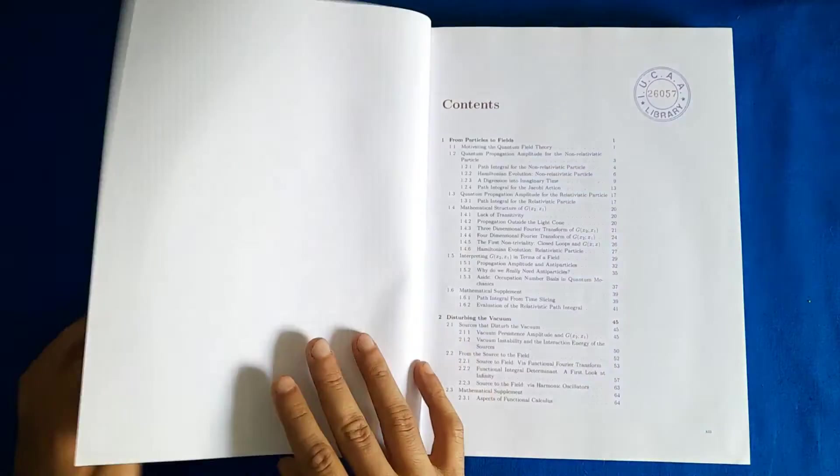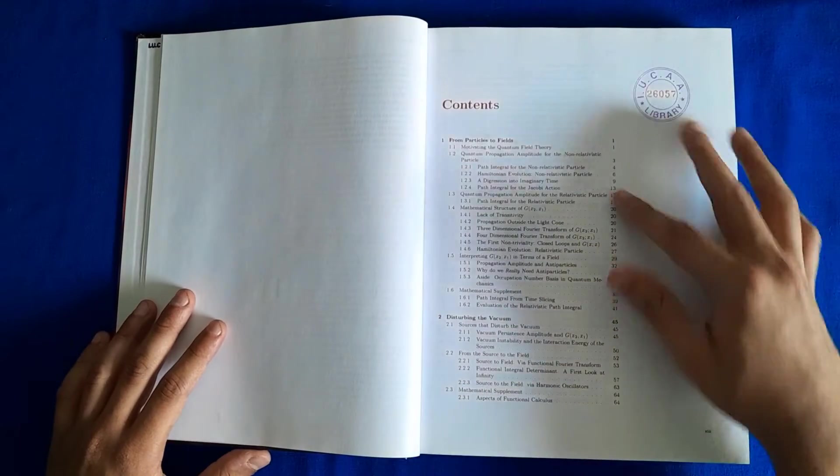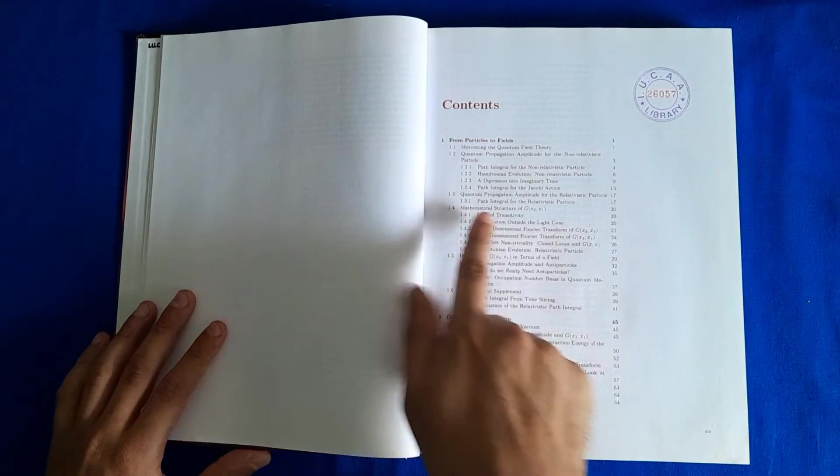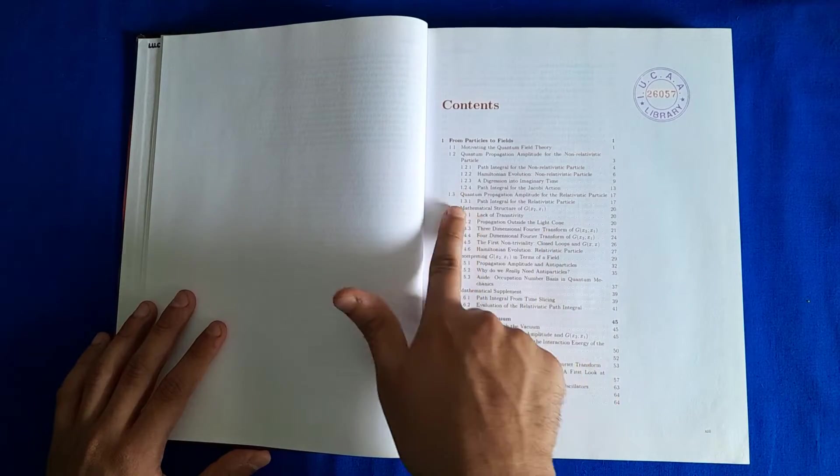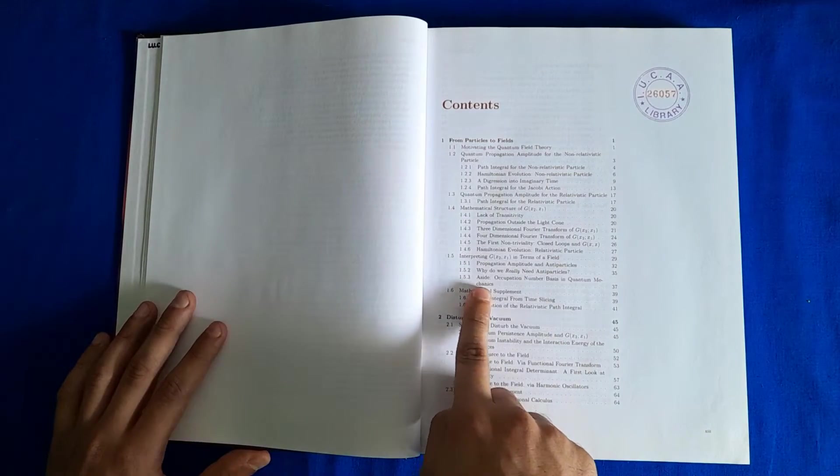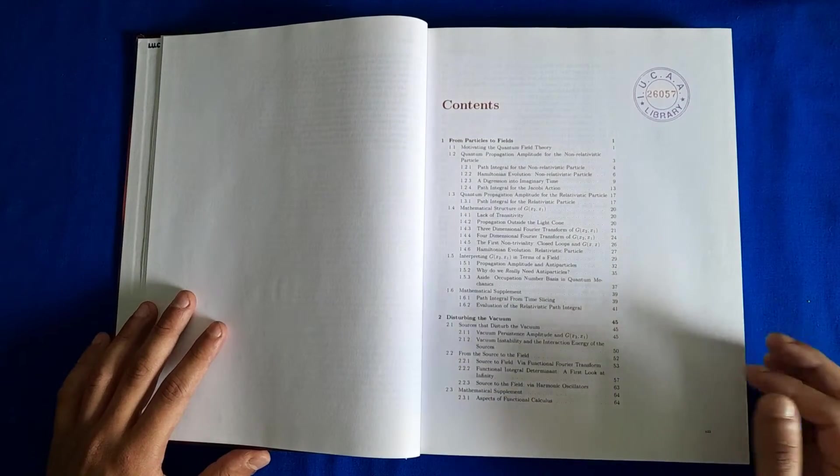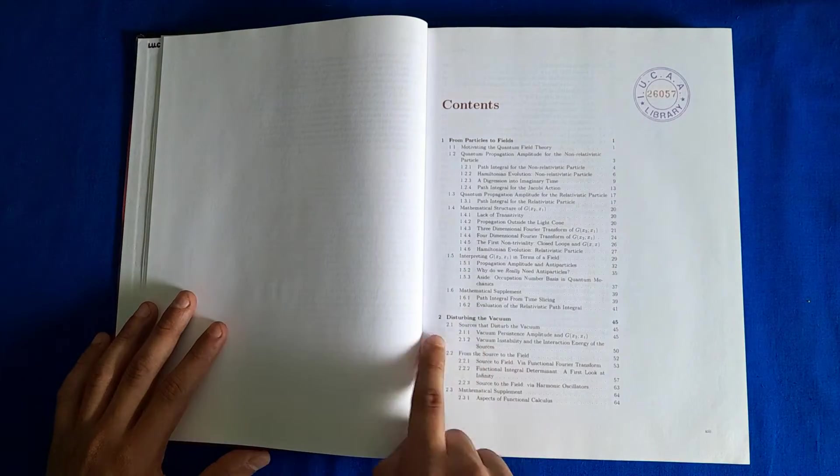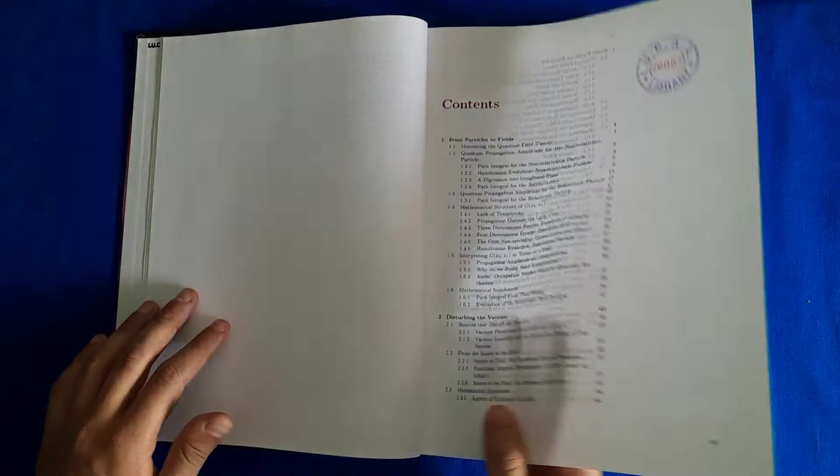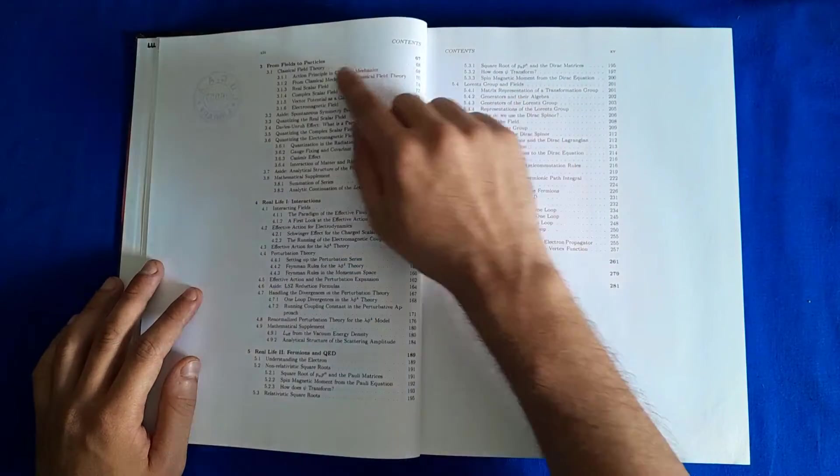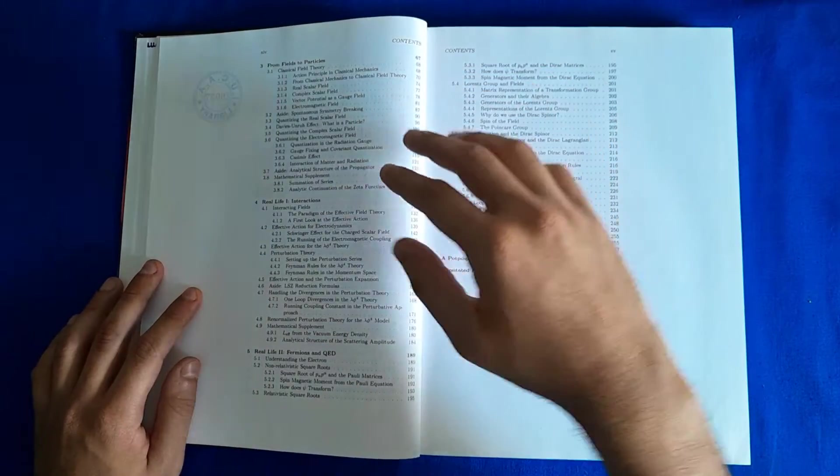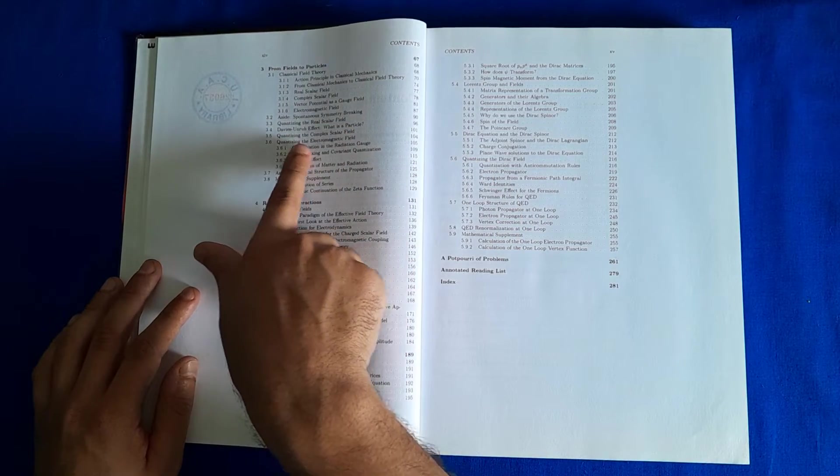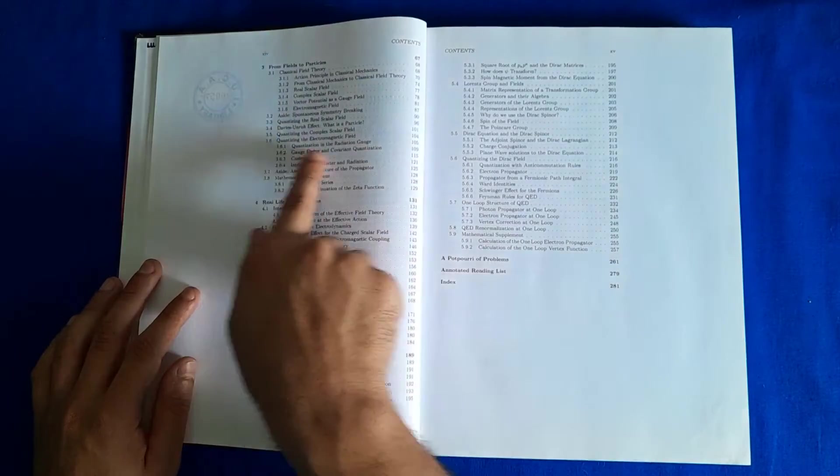This is more detailed contents from particles to fields. As you can see, they go with the propagator, quantum propagation amplitude for relativistic particles. So this is how you get to the notion of fields when you do relativistic quantum mechanics. Then you have vacuum, the sources of field and vacuum. Next is from fields to particles, the quantization of fields the other way around. So you can see quantizing real scalar field, complex scalar field, and so on, and quantizing the electromagnetic field.